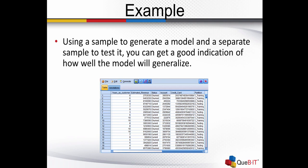In the example that we have here, notice that we have one new field that we've created — it's called partition — and we have some people that are going to be in the training data set, and other people that are going to be in the testing data set. Now we'll be able to build a model on the training data set, and test the model on the testing data set.